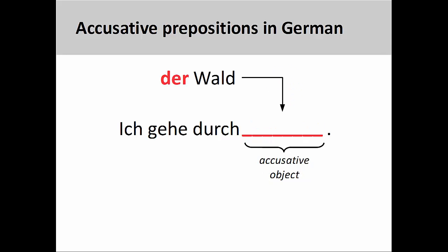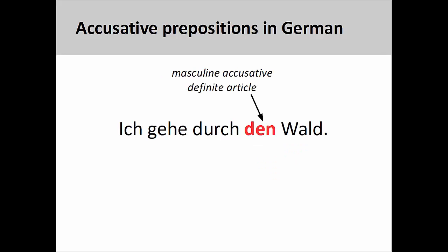You will notice, however, that the object of the preposition is in the accusative case. This brings us to an important rule about accusative prepositions: any noun that is the object of the preposition must be in the accusative case. Here, once I make 'der Wald' — which is in the nominative case — the object of the accusative preposition, the masculine definite article must be changed into its accusative form to show that it is the object of the preposition.